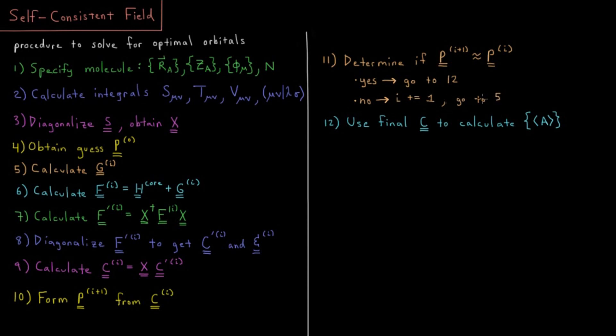So basically if it's not close enough to the previous iteration, we go back to step five, we calculate the new G from the new P, calculate the new F from the new G, calculate the new F prime from the new F, calculate the new C prime from the new F prime, calculate the new C from the new C prime, calculate the new P from the new C, and then see if the new P is the same as the old P. And we keep repeating and repeating and repeating until eventually, hopefully this procedure has iterated to a point of self-consistency.